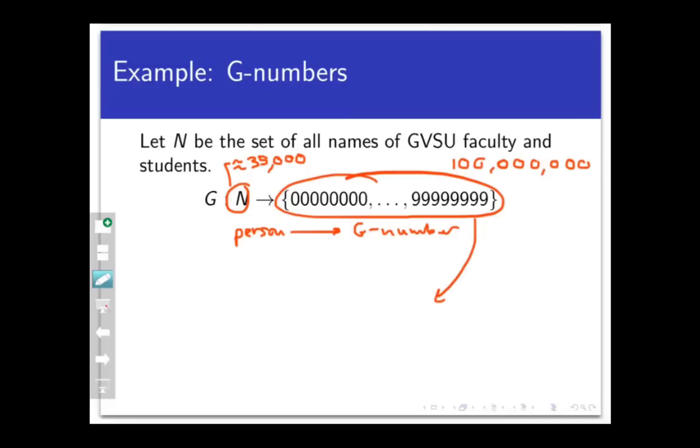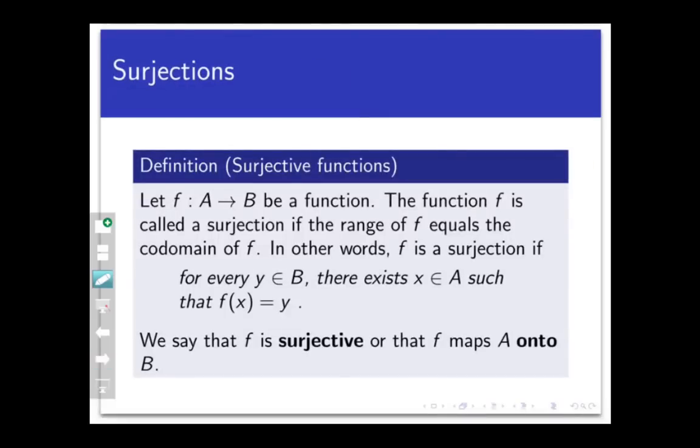Think about it. There are 100 million eight-digit strings available in the codomain of this function. GVSU has around 25,000 students and a few more faculty and staff. So unless there are some people with many different G numbers, which is not possible, not all of those G numbers are going to have corresponding people attached to them. There are some numbers, in other words, that are going to be uncovered. They will not appear as outputs of this function. In fact, I believe the process for generating G numbers forces the first three digits to be 0, 1, 0. And if that's true, then nobody can possibly have a G number that starts with, say, 999. So some functions have this everything's covered property, and some don't.